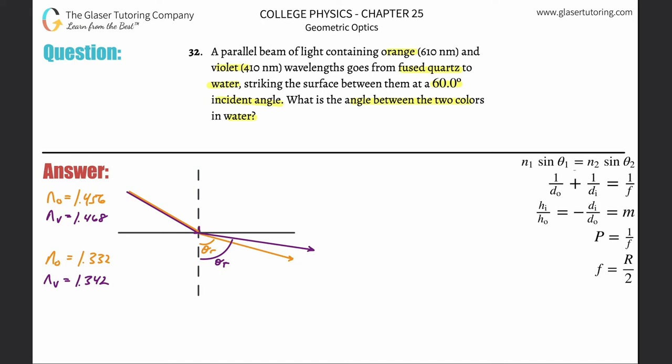For further practice, check out number 31, a very similar problem. Here on the top there's fused quartz, and on the bottom we're talking about water. These values are from table 25.2. We need to know the indices of refraction for all of them in the different mediums.